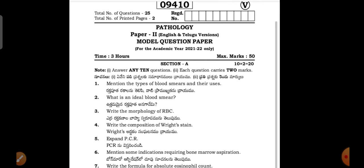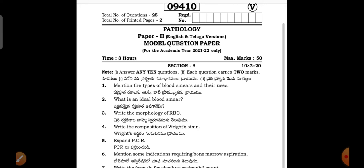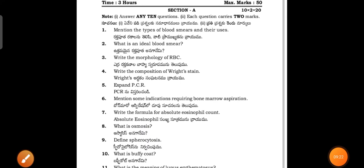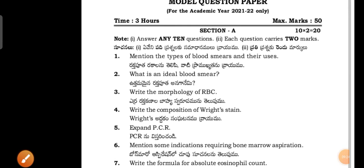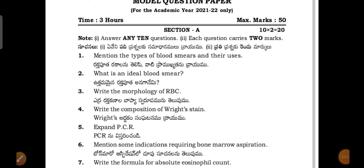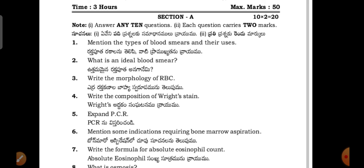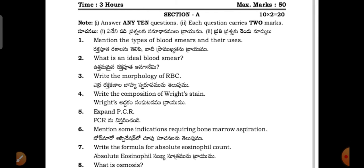Now let's look at a model question paper in pathology. This is for the academic year 2021 to 2022. The Government of Telangana Intermediate Board released it with a 70-passage choice format. In Section A, you have to attempt 10 questions, but this year they gave five-question choice in Section A and two-question choice, with five-question choice in Section B as well.